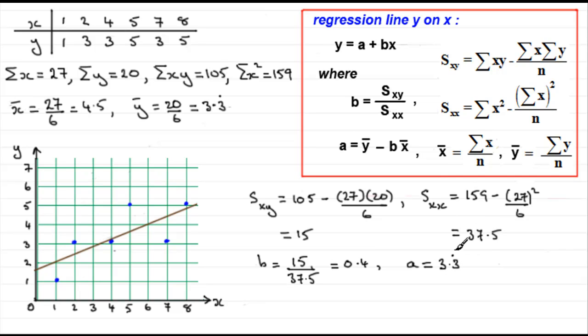Then we've got minus bx bar, so minus b, b was 0.4, and we're multiplying that with x bar. x bar was 4.5, and if you do that, what you get is 1.53 recurring, and I'll put a little dot over the top for the 3 recurring.